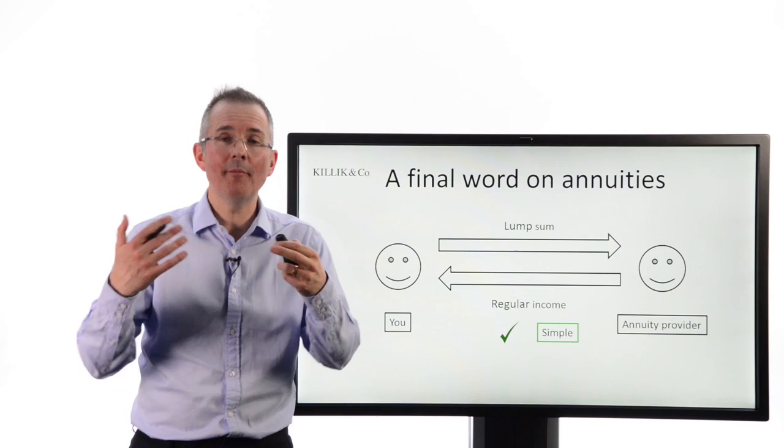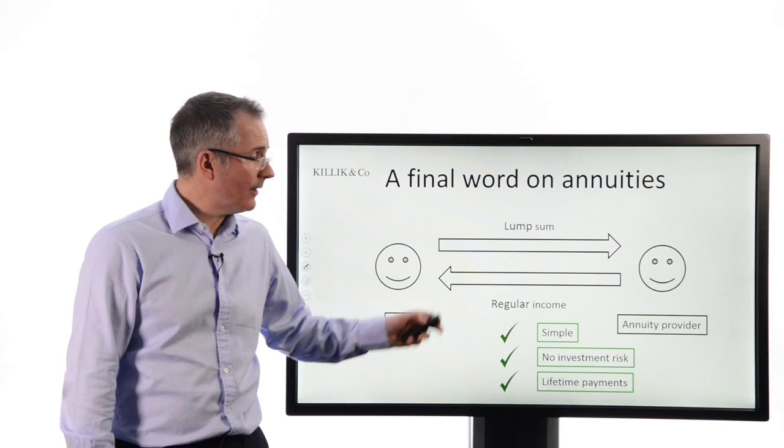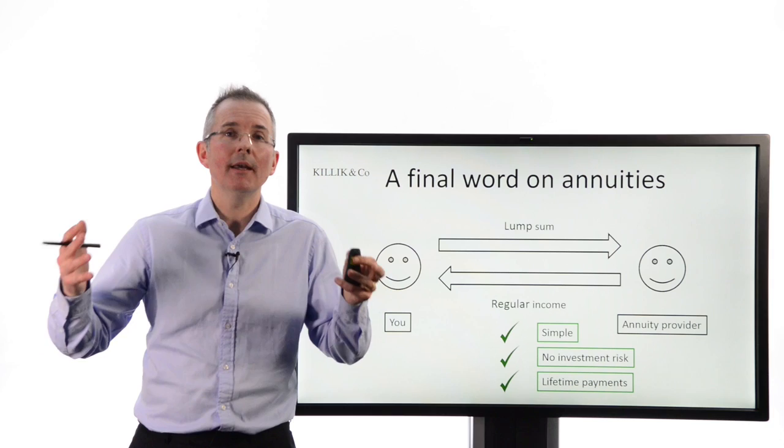Amongst them, they are simple. That's the deal. You hand your money over. From then onwards, you're not managing it. You're not worrying about investment risk. You get that income more or less guaranteed. There's no investment risk and you can expect to see lifetime payments. With an annuity, you're not going to run out of money, is what I'm saying, in most cases.